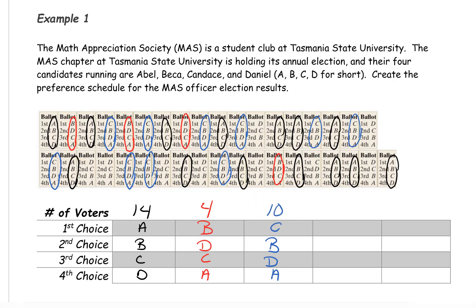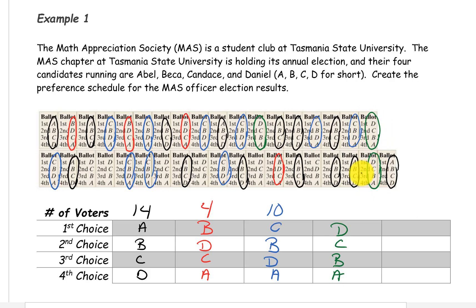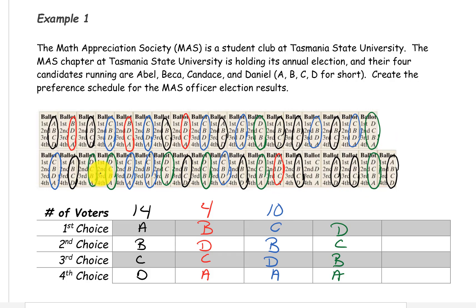Then we move on to the next uncircled ballot. That has the preference order D, C, B, A. And we can see that there are 8 of those.